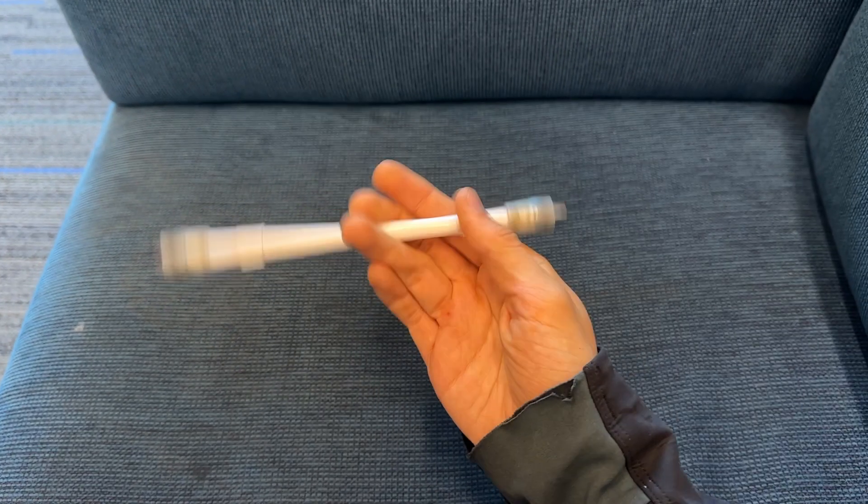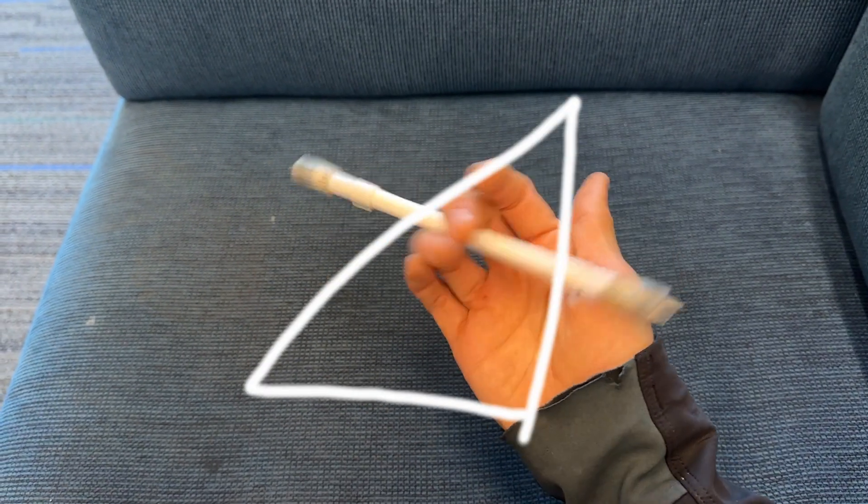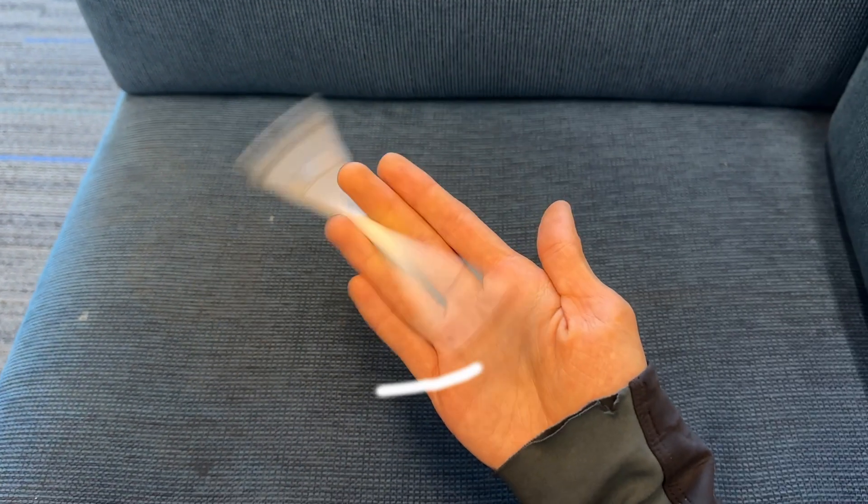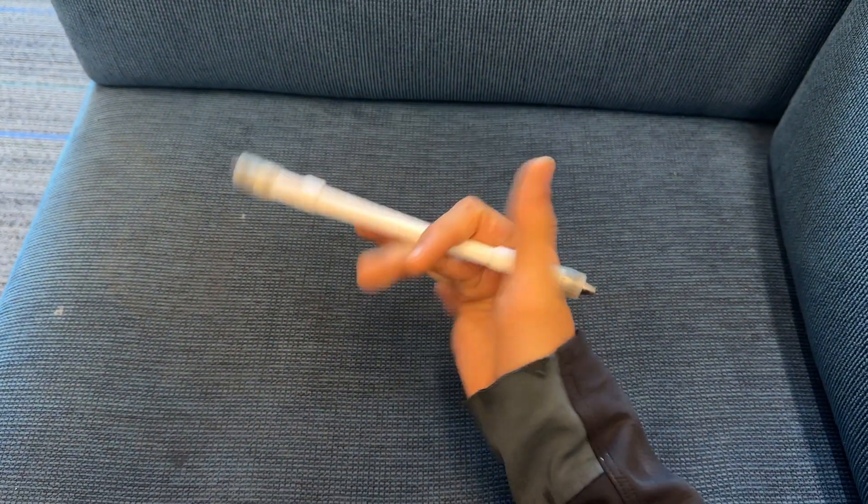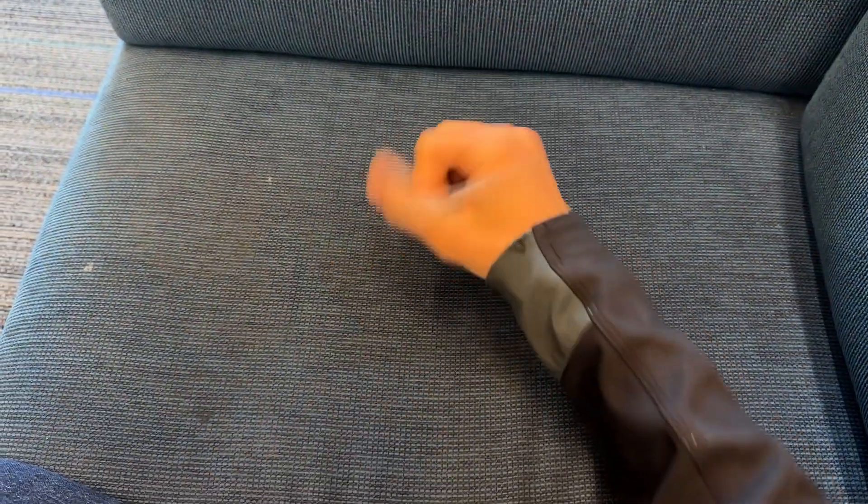And don't worry, it'll look like a triangle for a while, but over time should become more like a circle. Once you can do one, try doing two in a row without stopping. It just takes practice, so don't worry if you can't do it now.